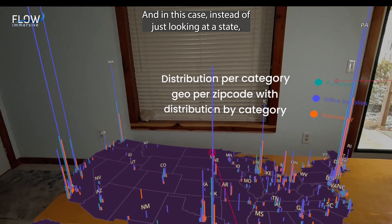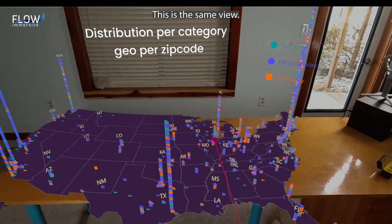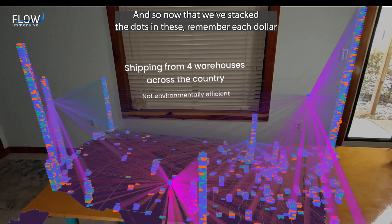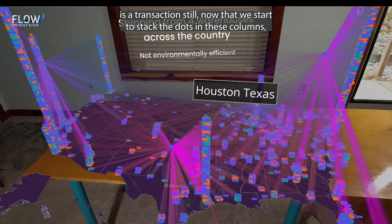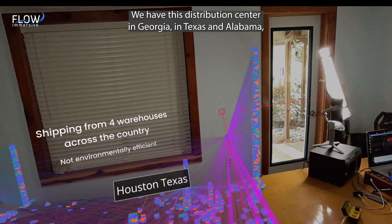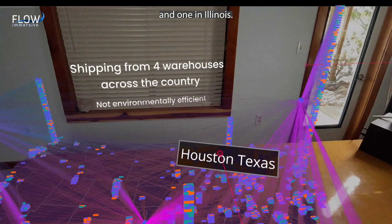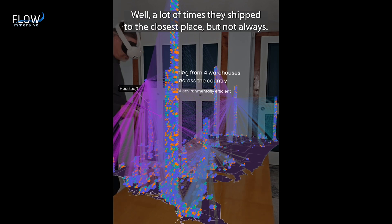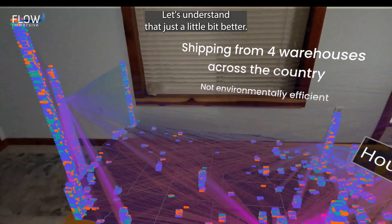And in this case, instead of just looking at it per state, we're going to look at it per zip code. So now you can see that some of the big cities, this is the same view. It's just that we've stacked the dots in a little different way. And now that we've stacked the dots in these columns, remember each dot is a transaction still. We have four different distribution centers. We have this distribution center in Georgia, in Texas and Florida, and one in Illinois. And here we can see that these distribution centers, where did they ship to? Well, a lot of times they shipped to the closest place, but not always. Let's understand that just a little bit better.